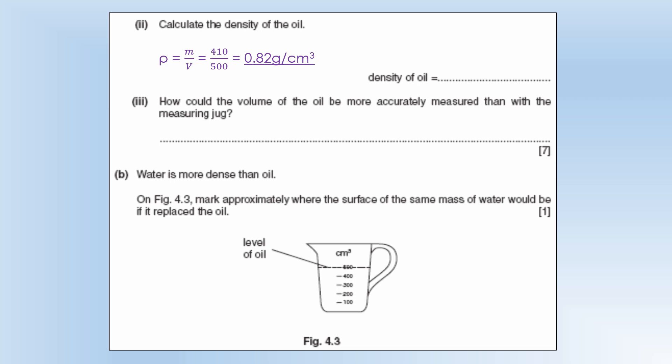How could the volume of oil be more accurately measured than with a measuring jug? Well you can see the measuring jug only has divisions every 100 millilitres or a resolution of 100 centimeters cubed so we could switch to a measuring cylinder which have a much higher resolution. They can measure to the nearest centimeter cubed for example.